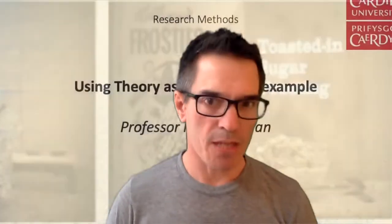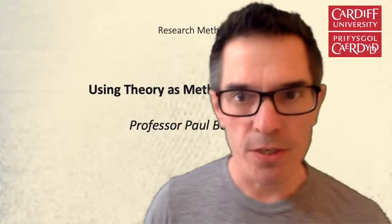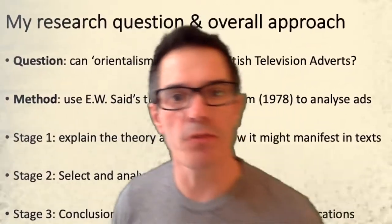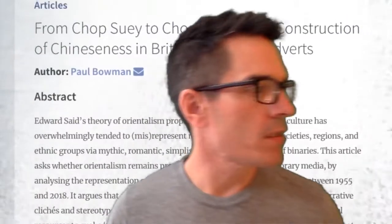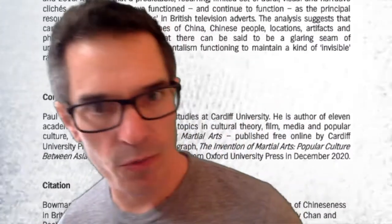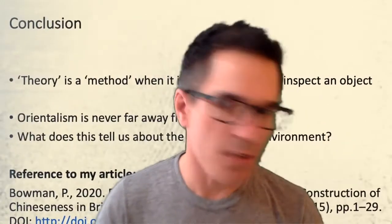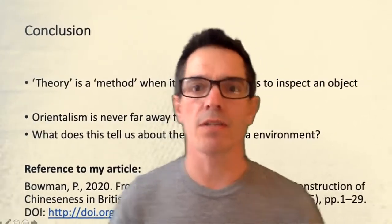The results of this particular piece of using theory as method were published in JOMEC Journal, which is available free online at Cardiff University Press — I think it's jomec.cardiffuniversitypress.org. The title of my article is From Chop Suey to Chop Socky: The Construction of Chineseness in British Television Adverts, published in 2020. The primary text I drew on as my theoretical foundation is Edward Said's 1978 book, Orientalism: Western Conceptions of the Orient.